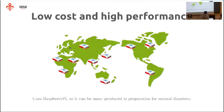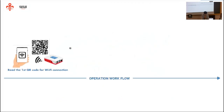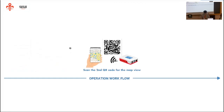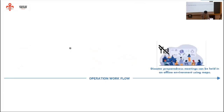The Raspberry Pi can be mass-produced in preparation for a natural disaster. First, scan a QR code to connect your smartphone to the Raspberry Pi. Then scan a second QR code to access the web map. After that, you can discuss and coordinate using the web map in an offline environment.